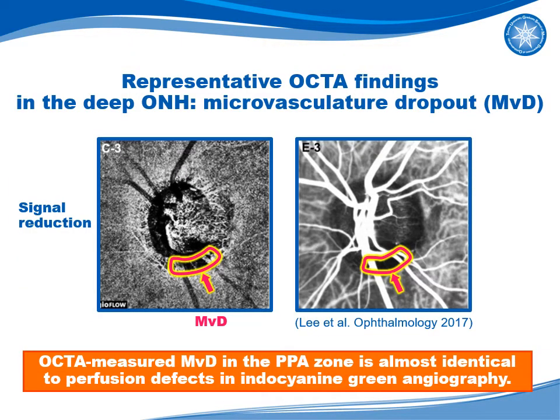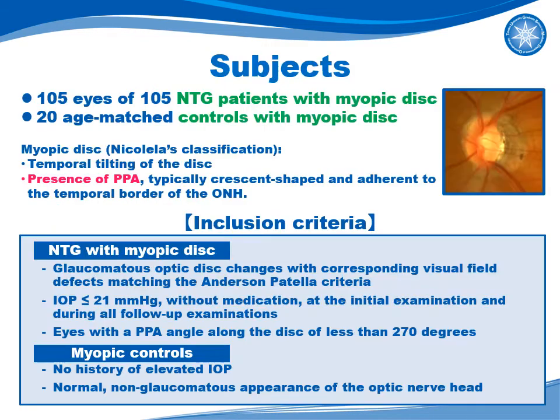Lee et al. showed that microvascular dropout, MVD, in the peripapillary atrophy area can often be detected with OCTA imaging. They also demonstrated that OCTA-measured MVD in the PPA zone is almost identical to perfusion defect in indocyanine-green angiography. In this study, we investigated OCTA measurement of vessel intensity in PPA in 105 NTG patients and 20 age-matched controls with myopia.